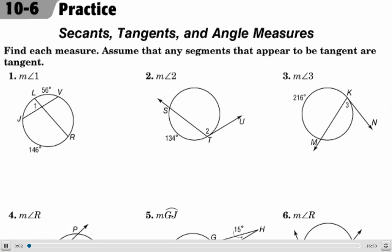This is lesson 10.6, Secants, Tangents, and Angle Measures. Your objectives are to find the measures of angles formed by lines intersecting on or inside a circle, and to find measures of angles formed by lines intersecting outside of a circle.